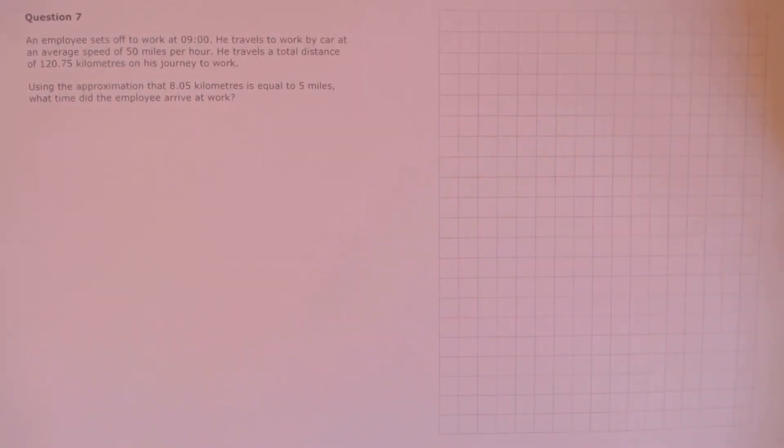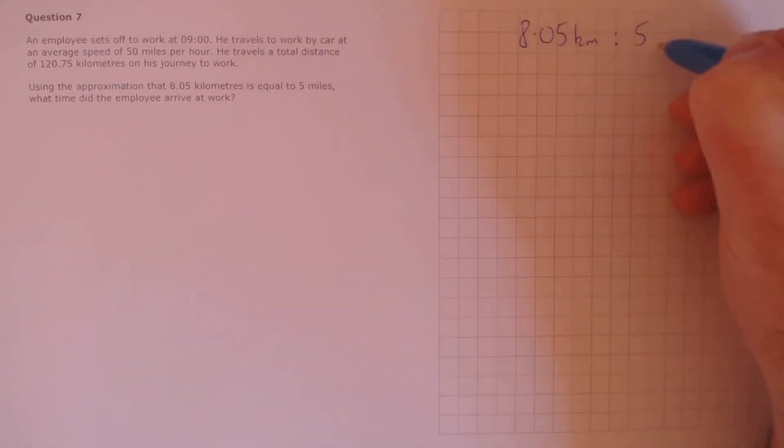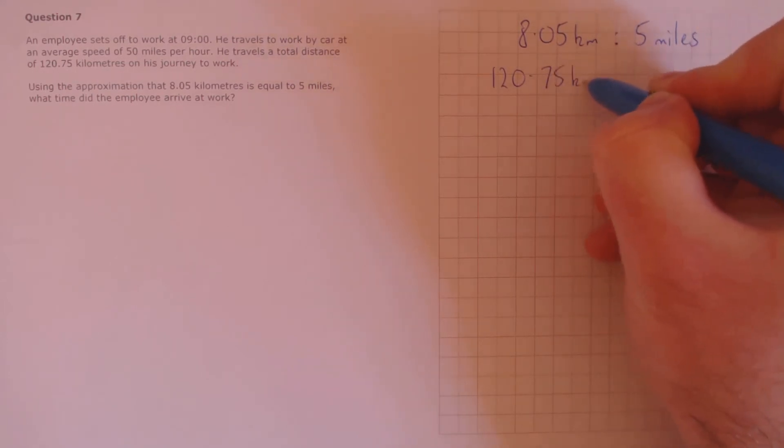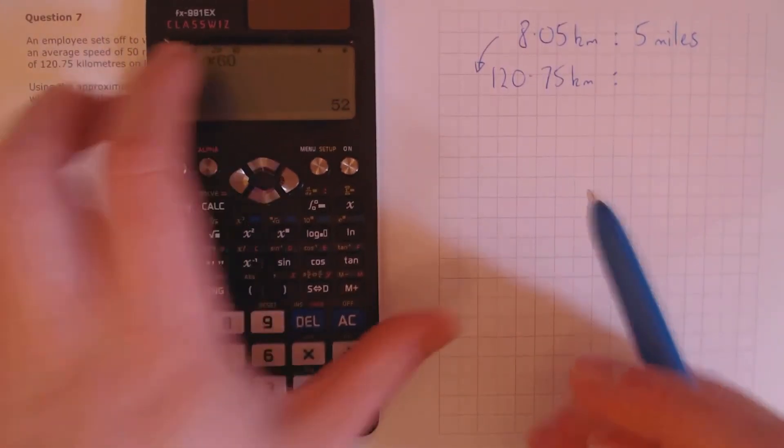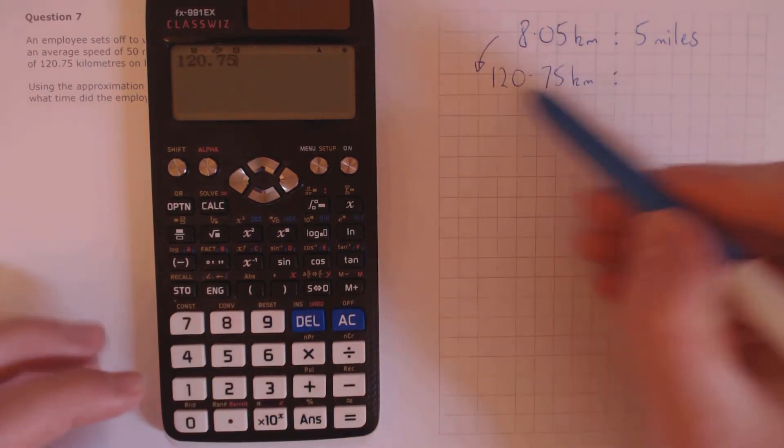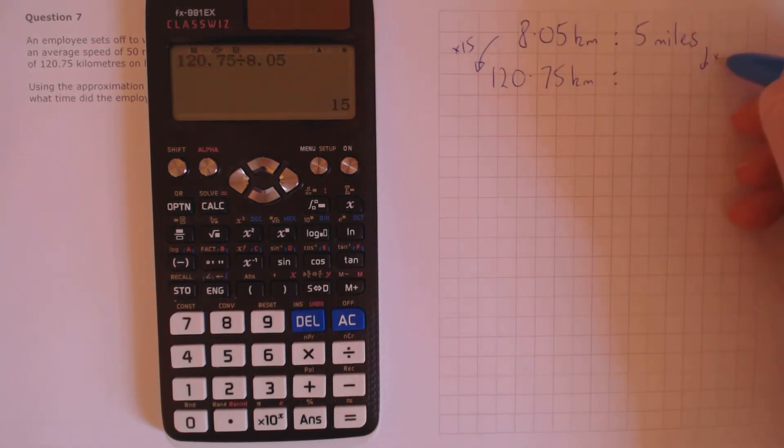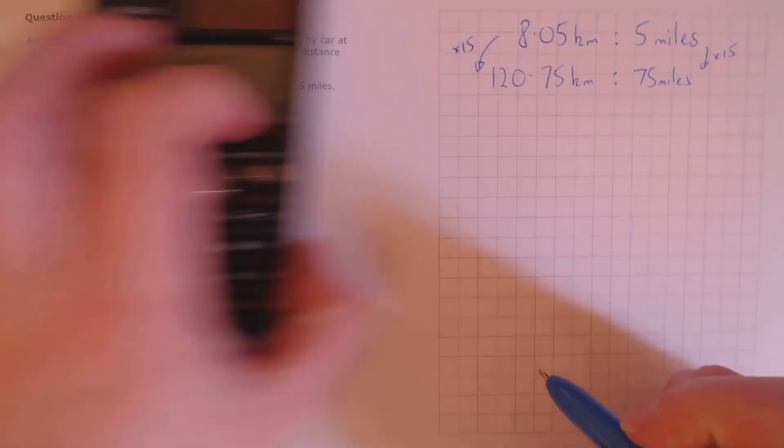Question 7. An employee sets off to work at 9 o'clock. He travels to work by car at an average speed of 50 miles per hour. He travels a total distance of 120.75 kilometres on his journey to work. Using the approximation that 8.05 kilometres is equal to 5 miles, what time did the employee arrive at work? First let's convert this 120.75 kilometres into miles. We need to know the number that we've multiplied this side of the ratio by to get this, so we do a division the other way around. So 120.75 divided by 8.05, that's multiplied by 15. Do the same to this side of the ratio, 5 times 15, that's 75 miles is equivalent to 120.75 kilometres.